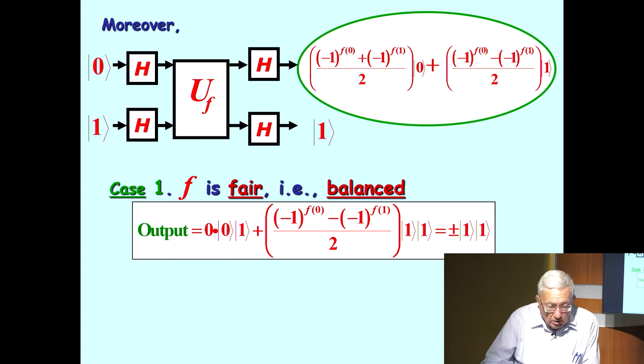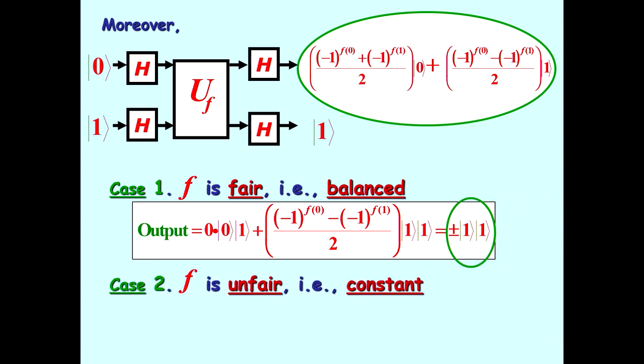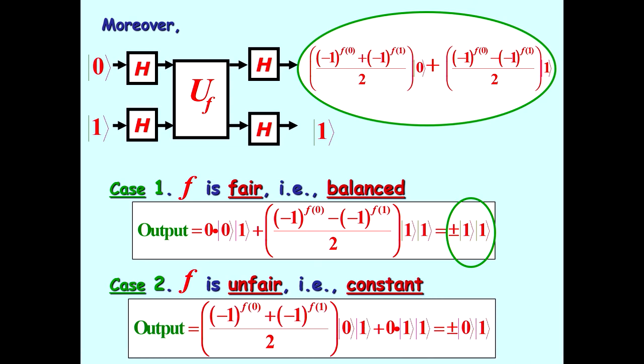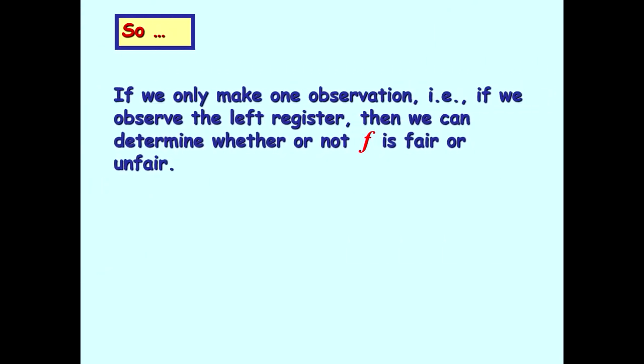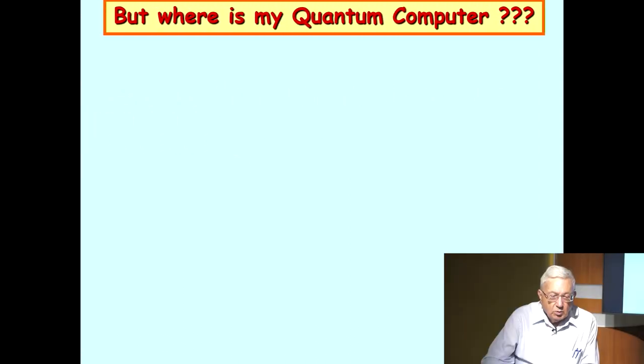All right, zero times this, plus the other, which is actually, since these are different, either plus or minus one. And if we look at case two, if f is unfair, then what happens? We'll notice that the amplitude of the first, ket zero, ket one, is actually plus or minus one, because these two are the same. And if we measure this, we'll get ket zero. So the end result is that if we measure the first qubit, we either get one or zero, which tells us whether or not the coin is fair or not. So if we only make one observation, and that we have, if we observe the left register, then we can determine whether or not f is fair or unfair.